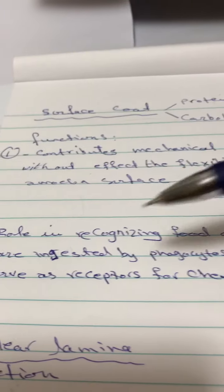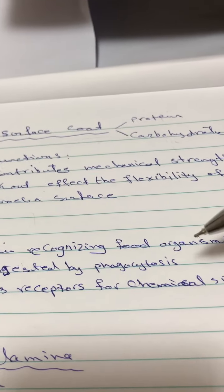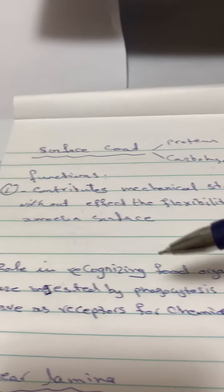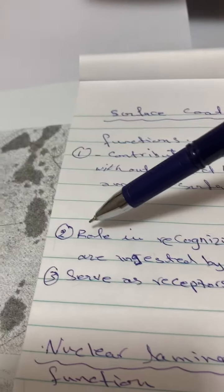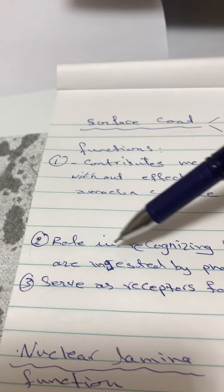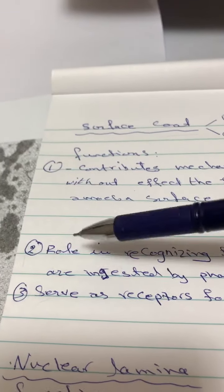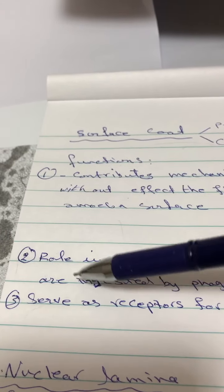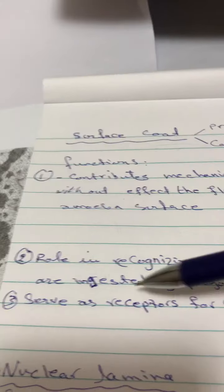Number two, the surface coat has a role in recognizing food organisms during ingestion by phagocytosis. This is the part which recognizes the food during phagocytosis.